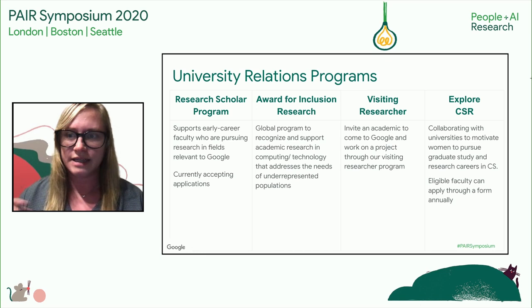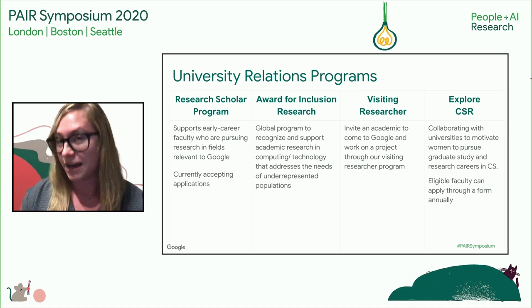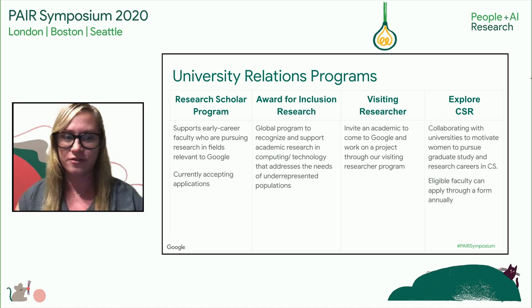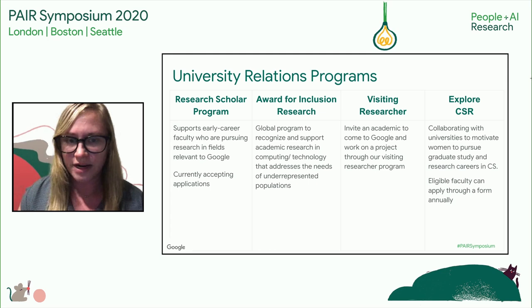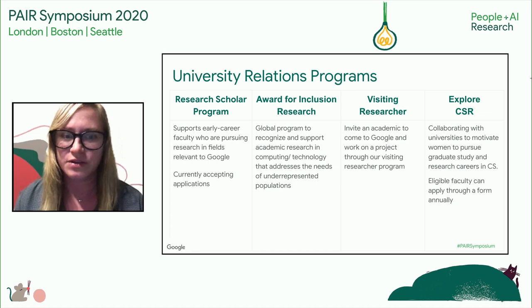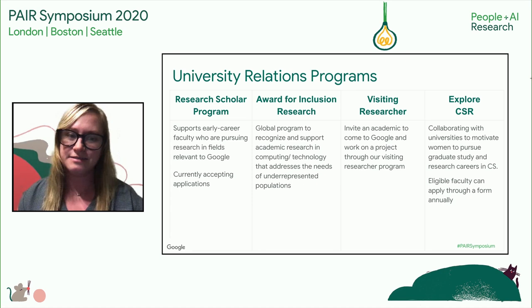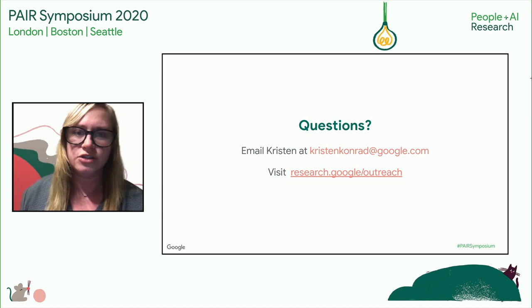The Research Scholar Program aims to support early career faculty pursuing research in fields relevant to Google. Faculty must have their PhD within seven years of submission, and applications are currently open. We also have the Award for Inclusion Research — a global program recognizing academic research in computing or technology that addresses the needs of underrepresented groups. The Visiting Researcher Program allows Googlers to do research with faculty, postdocs, and industry researchers. The Explore CSR program collaborates with universities to motivate women to pursue graduate study in CS. I encourage you to reach out to one of our Google researchers or myself.